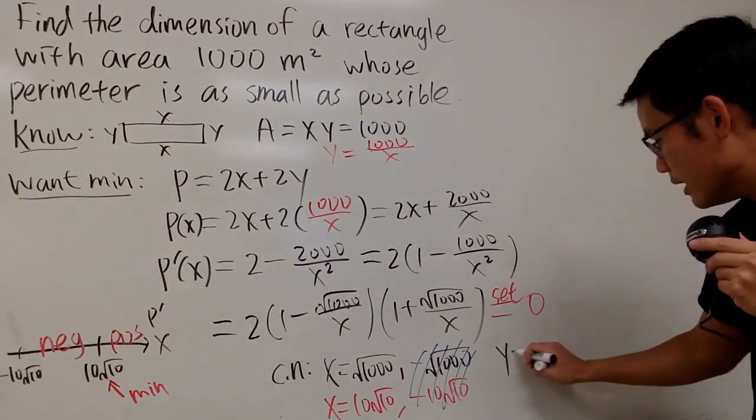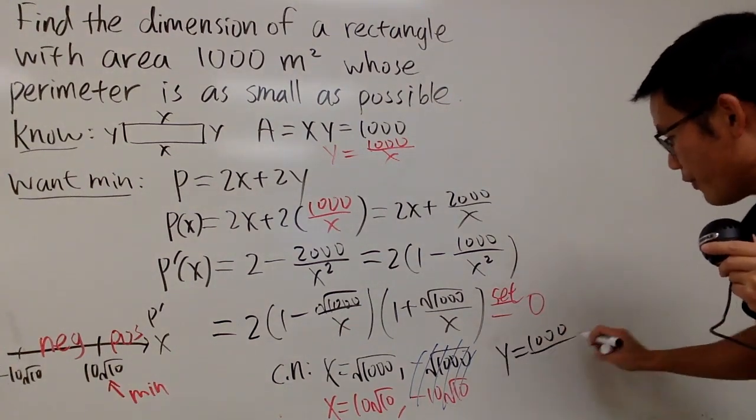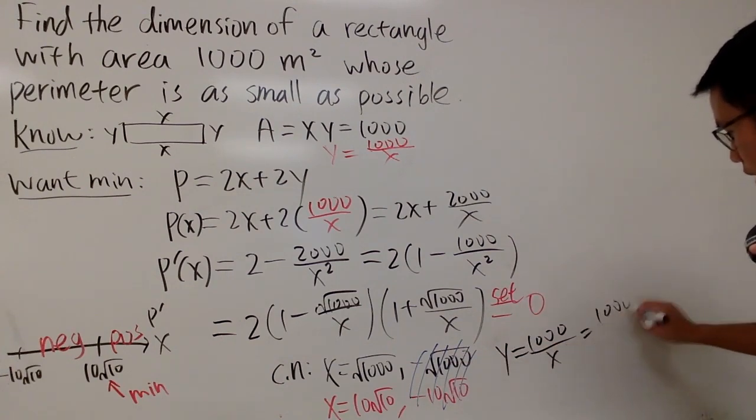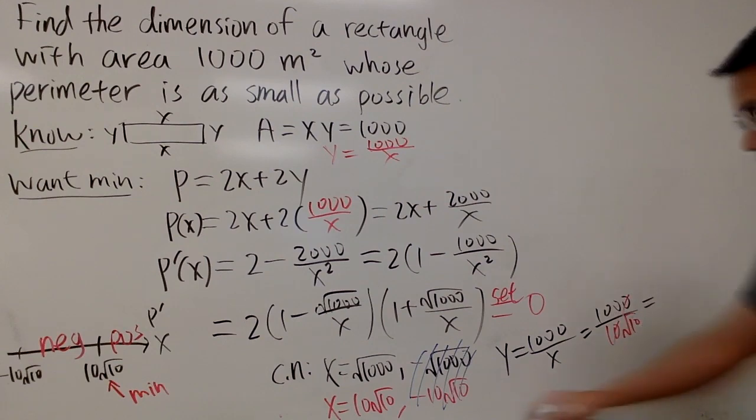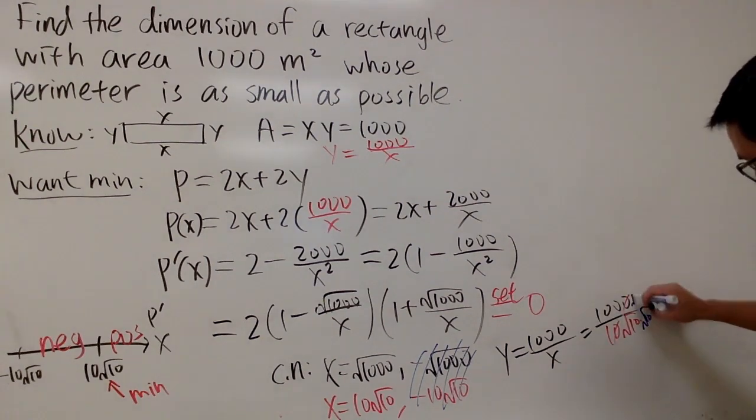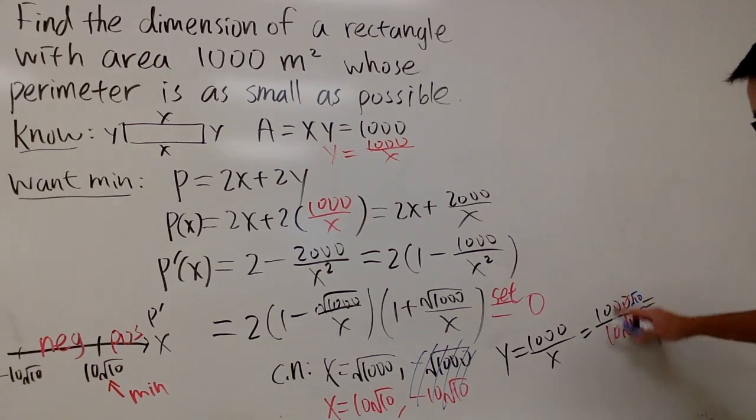y is 1000 over x, which is going to be 10 square root of 10. And, of course, you can cancel, cancel. 100 over square root of 10. And if you would like, you can just multiply the top and bottom by square root of 10, if you would like. And then you actually end up... On the bottom, it's going to be 10. So you can cancel out a 0, and you get 10 square root of 10.